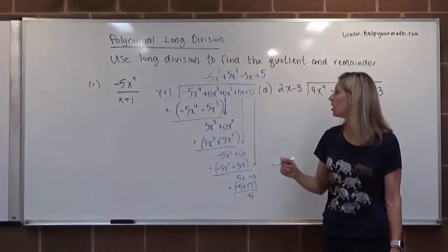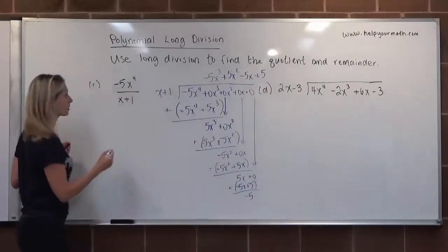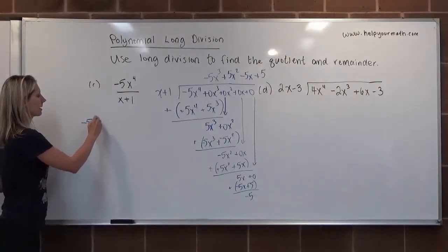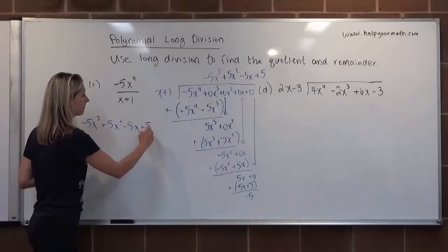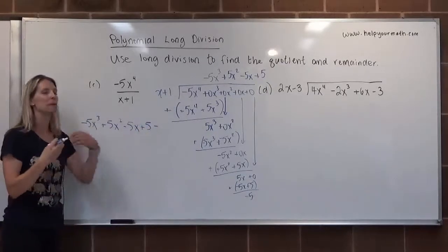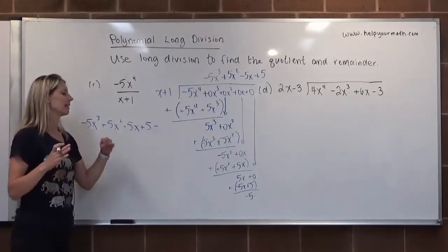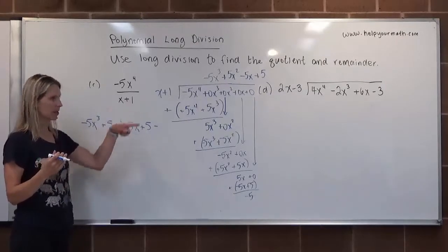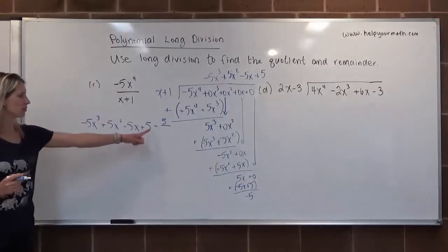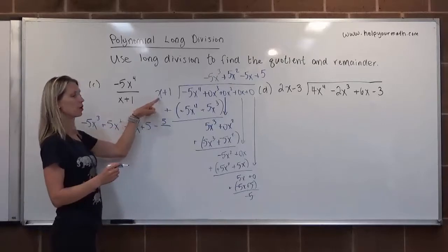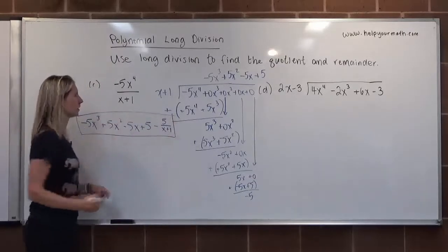So -5 is our remainder. The full quotient is -5x³+5x²-5x+5, and we subtract 5/(x+1) since the remainder is negative. So the final answer is -5x³+5x²-5x+5 minus 5/(x+1).